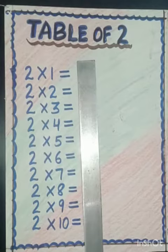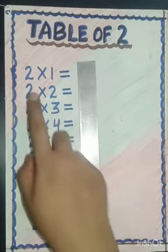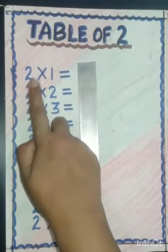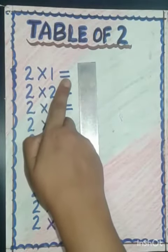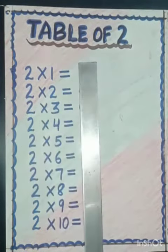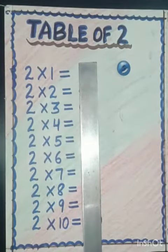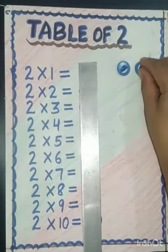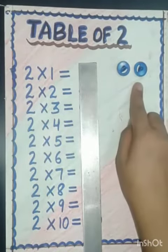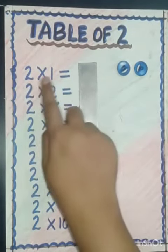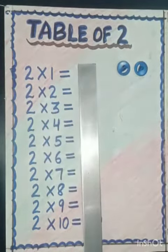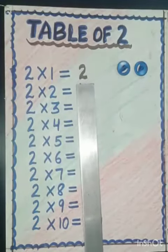How we get the table of two. So first is two ones are — two ones are means two things. So two ones are two.